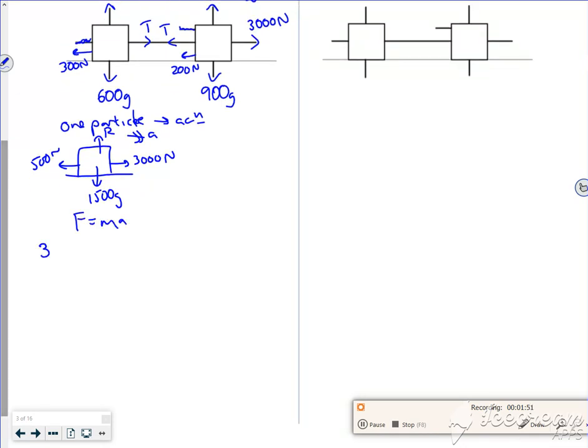So forcing the direction of travel is 3000, opposing it is 500. That's equal to a combined mass of 1500 over a. So that gives me 5/3 meters per second squared, so 2500 over the difference.